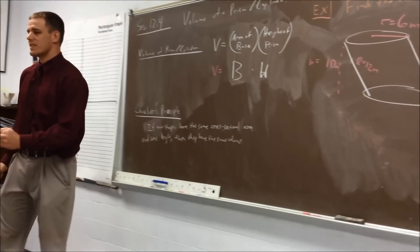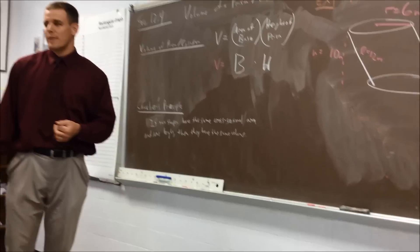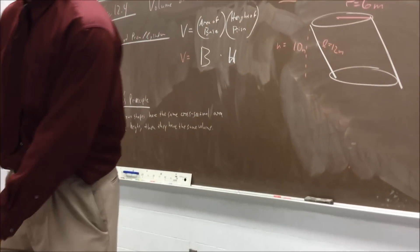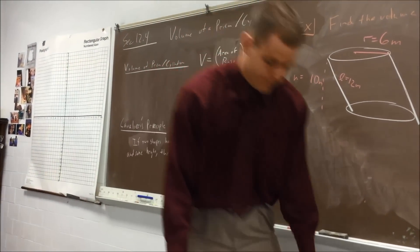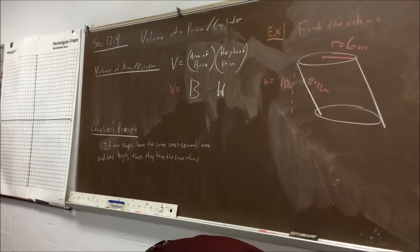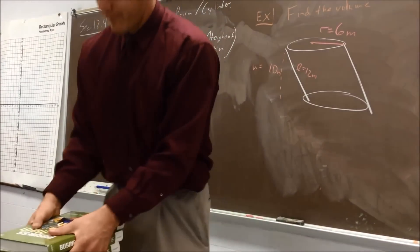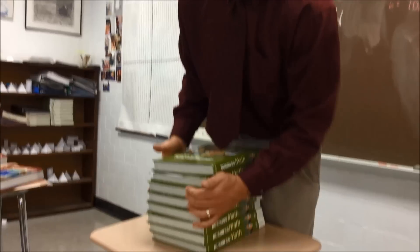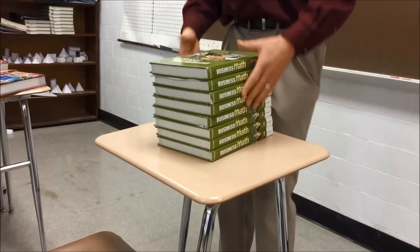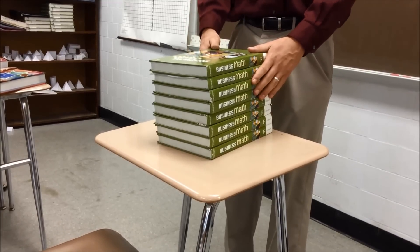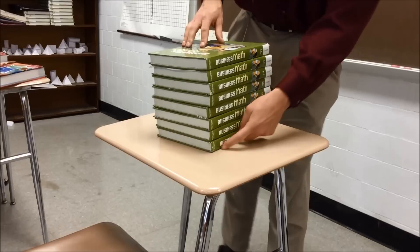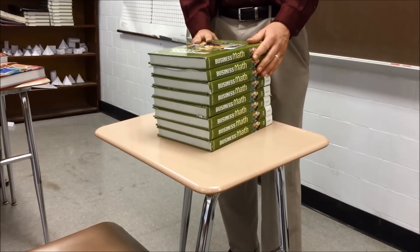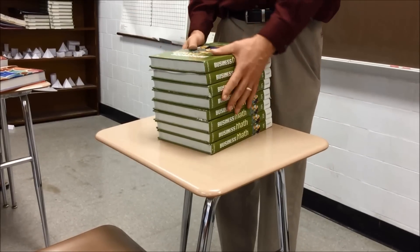Now, these two shapes have the same volume — what does that mean? Think of it this way: let's make up our own units and call them cubic books. Count the books here: 1, 2, 3, 4, 5, 6, 7, 8. The volume is 8 cubic books.